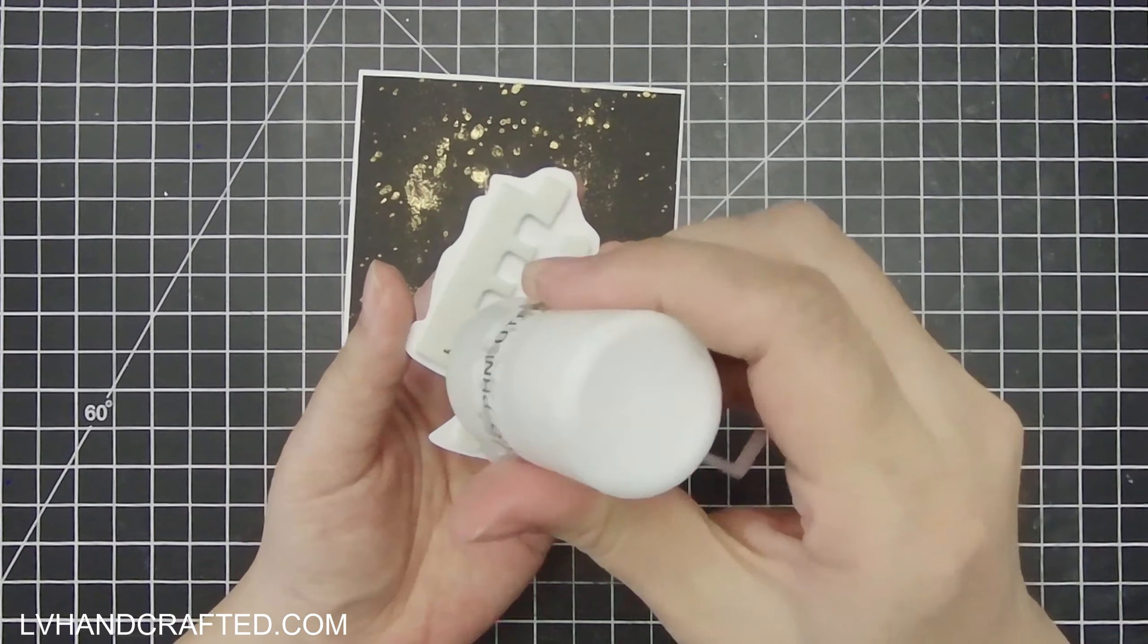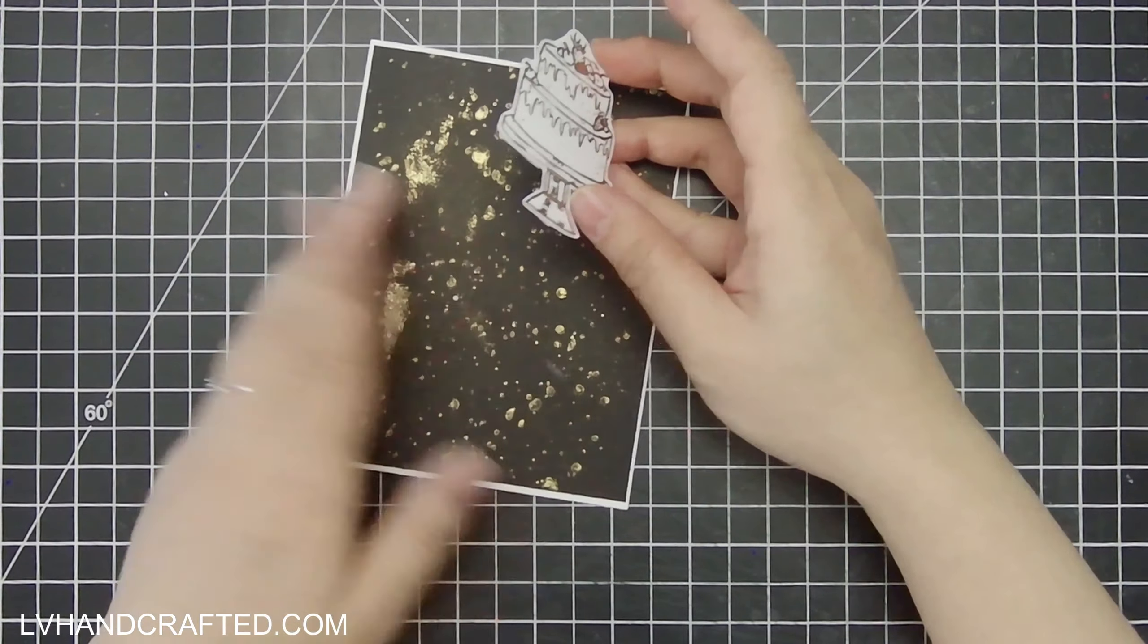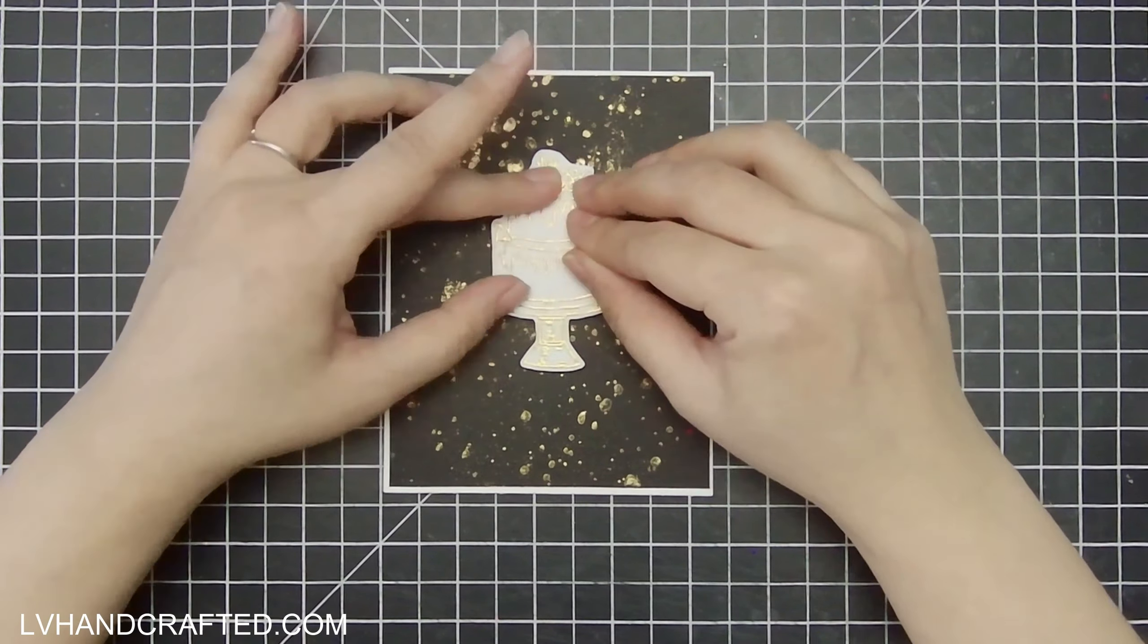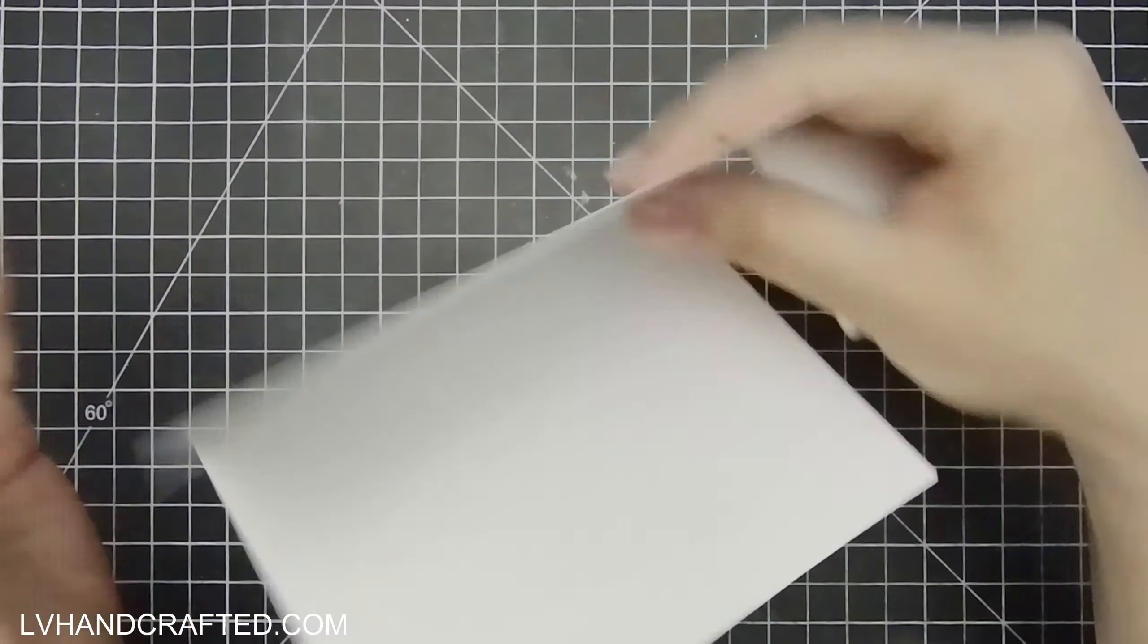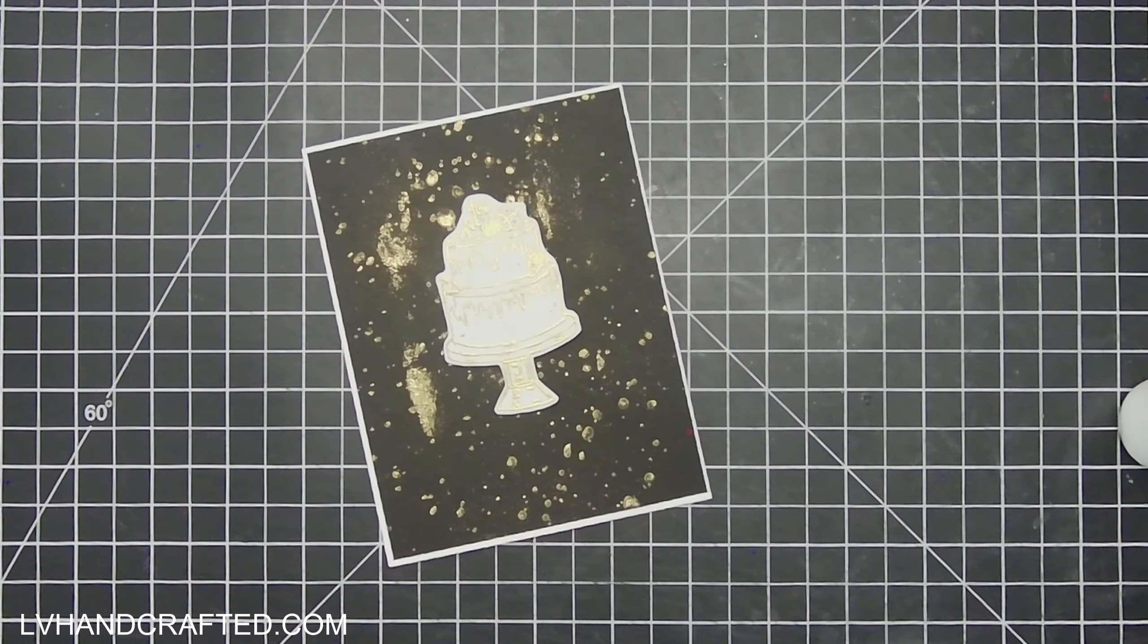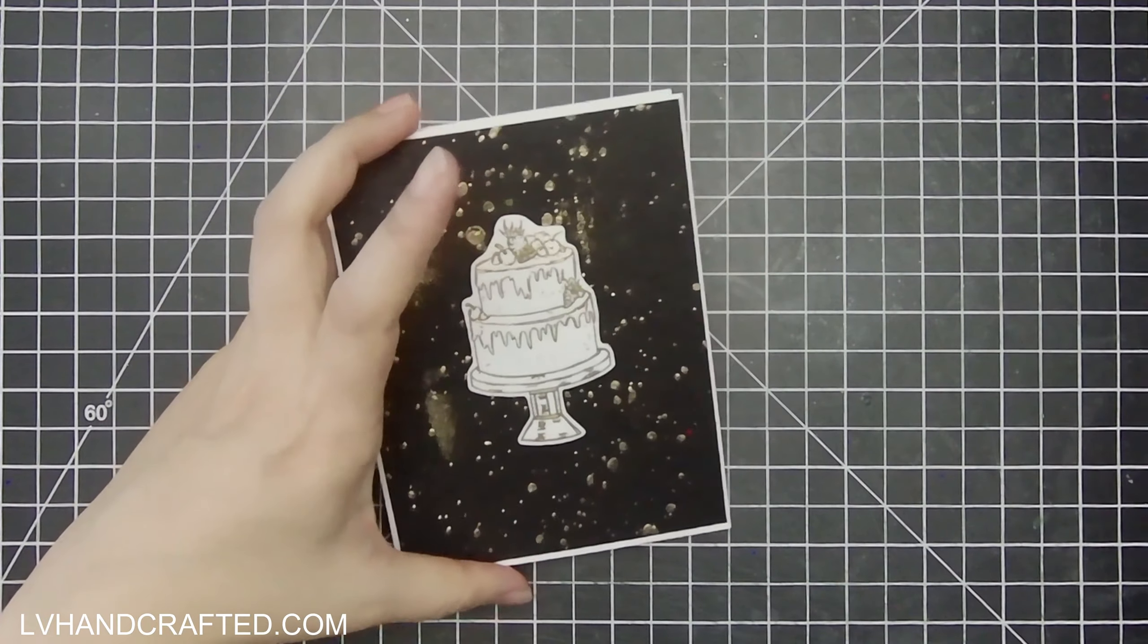So I'm just going to get this die cut right onto my background and I'm not going to color this either. I really want these cards to just be really simple and have just that gold background, so to speak, for itself.